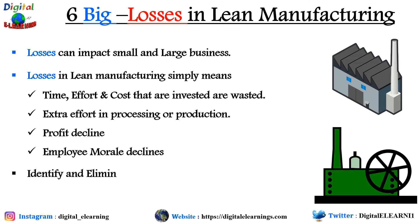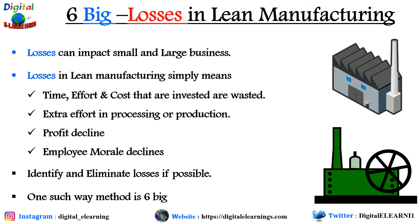That is why we need to first identify these losses on a regular basis, and only then can we take corrective actions to minimize or eliminate them from the system. One such method is the six big losses framework in lean manufacturing. Let's understand more about what these six big losses are.